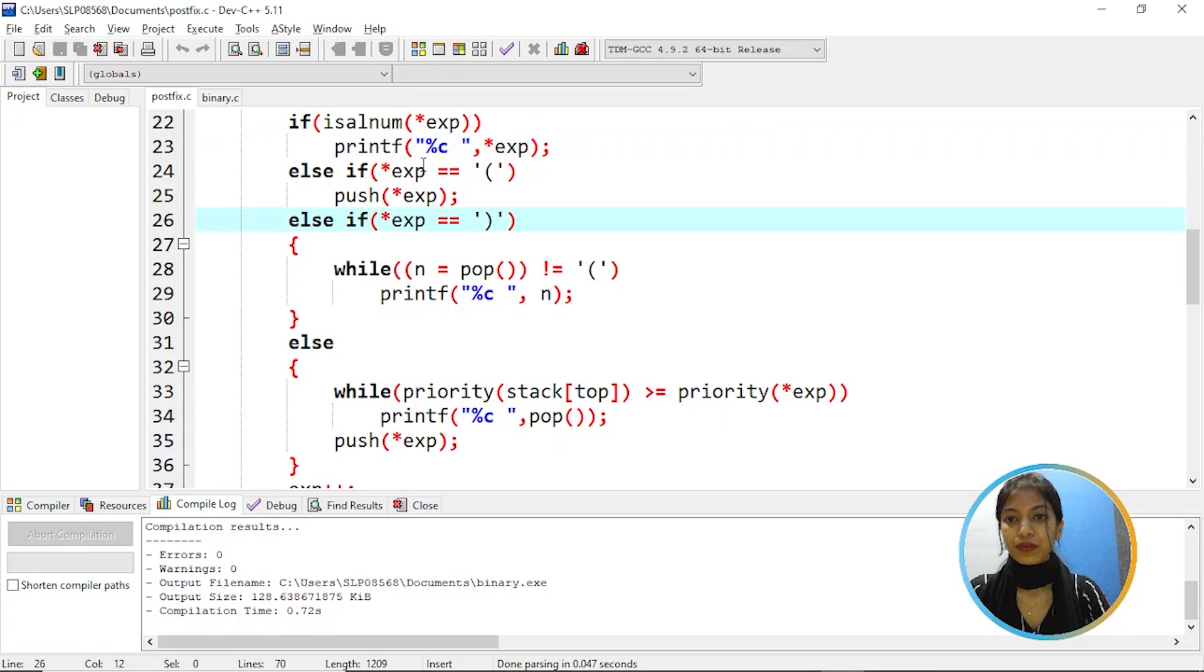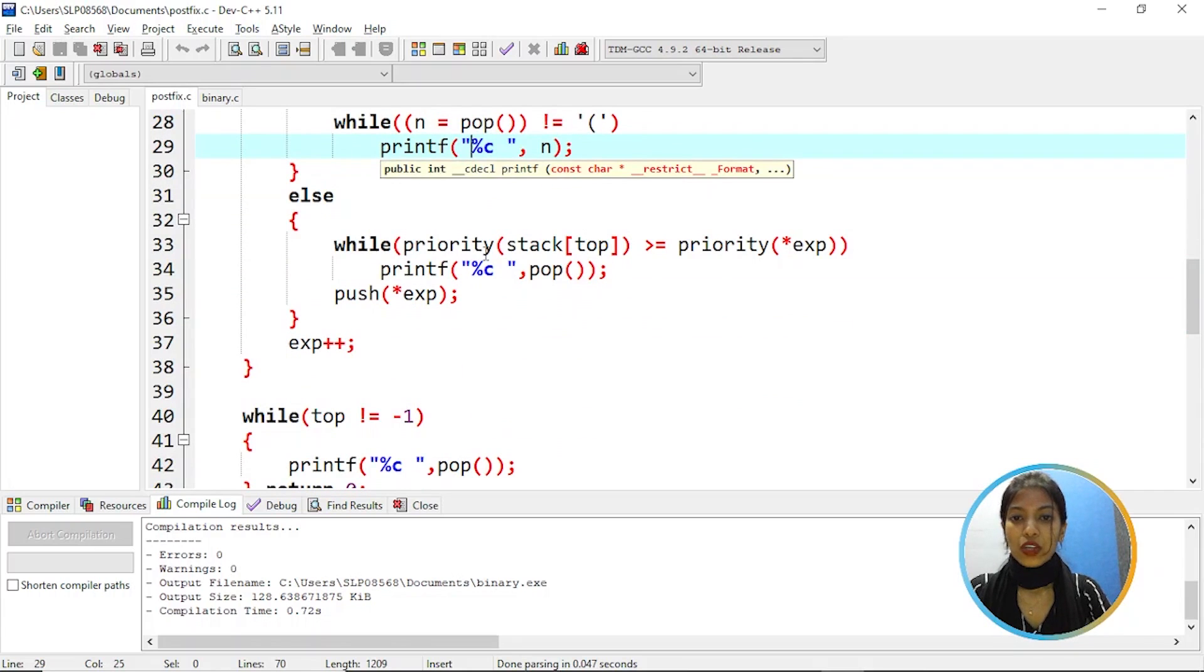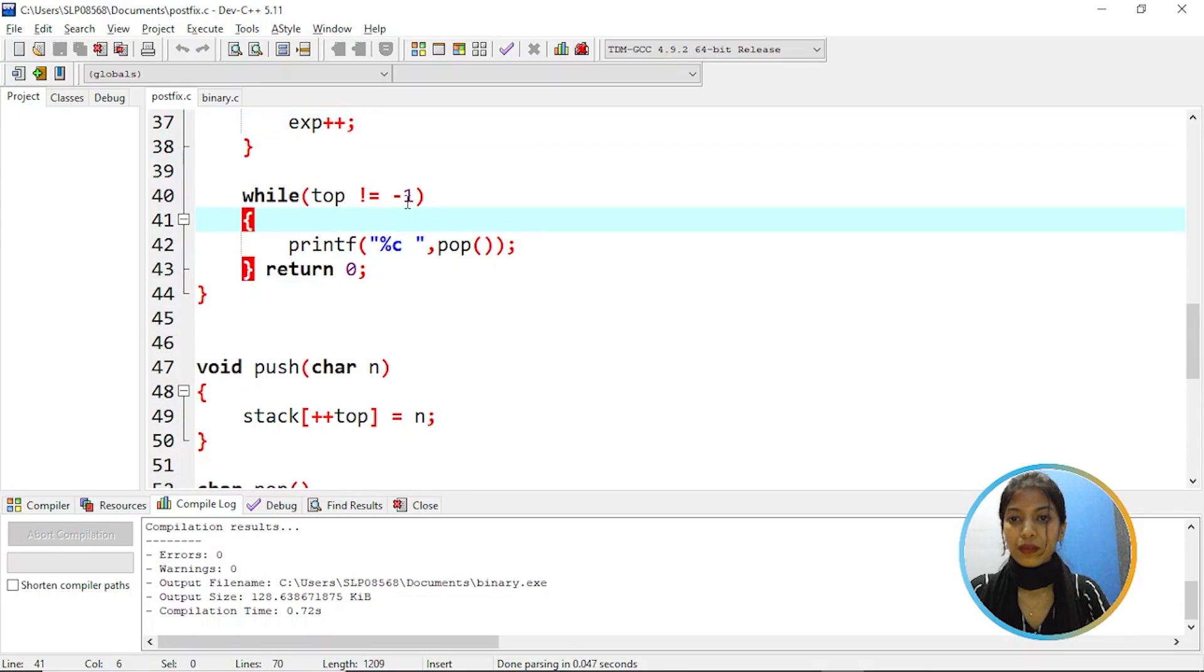So if is alnum of expression that means if the expression is alphanumerical then print the expression. Else if prints the character and else if expression is equal to open parenthesis then push to x calling the push function. Then else if expression is equal to closing parenthesis while n is equal to pop not equal to then pop. That means if stack is not empty then pop out the character. Return zero.